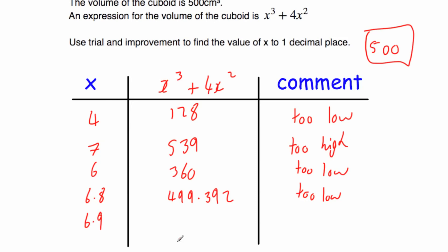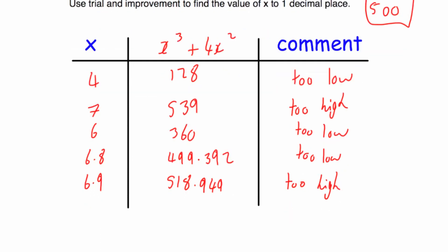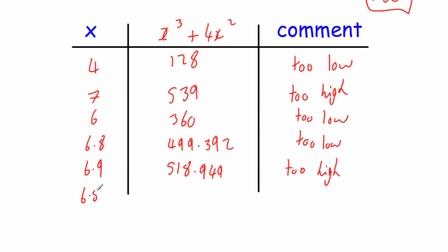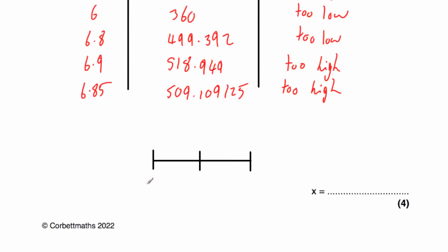Let's try 6.9: that gives 518.949 — too high. So the answer is between 6.8 and 6.9. Let's try the checker 6.85: that gives 509.109125 — too high. So 6.8 is too low, 6.9 is too high, and the checker 6.85 is also too high. Our solution is closer to 6.8 than to 6.9. To one decimal place, our answer is 6.8 centimeters.